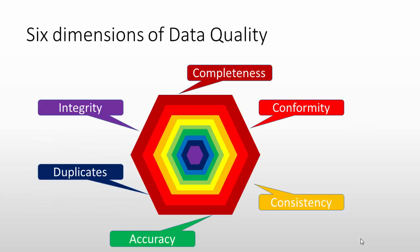Now let's look at the dimensions of data quality. There are several data quality dimensions, but we will focus on the major ones. These are: completeness, conformity, consistency, accuracy, duplicates, and integrity. Along with these, there are also minor dimensions such as trust of the data and decay of data.